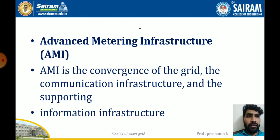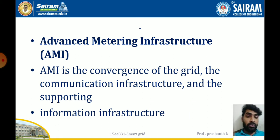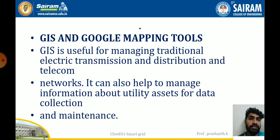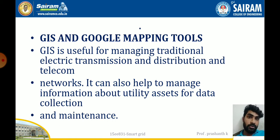Advanced Metering Infrastructure, or AMI, is the convergence of the grid, the communication infrastructure, and the supporting information infrastructure. Next, GIS and Google Mapping tools — GIS is useful for managing traditional electrical transmission and distribution and telecom networks.